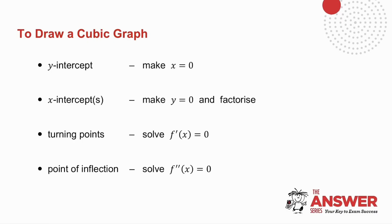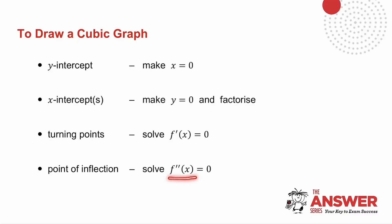To draw a cubic graph: I find the y-intercept by making x equal to zero; I find the x-intercept by making y equal to zero and factorizing. For the turning points, I make the derivative equal to zero and solve. For the point of inflection, I take the second derivative — the derivative of the derivative — and make it equal to zero.